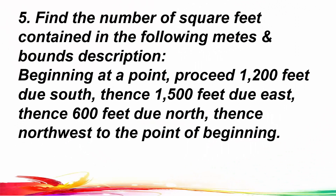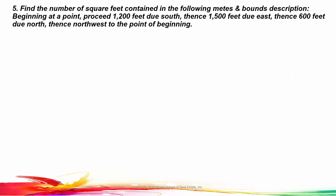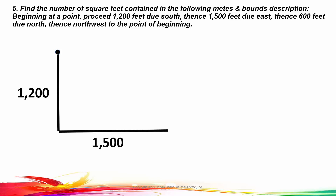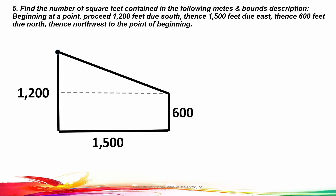Number 5: find the number of square feet contained in the following metes and bounds description. Beginning at a point, proceed 1,200 feet due south, then 1,500 feet due east, then 600 feet due north, then northwest to the point of beginning. So what we have here is a trapezoid. Take your scrap paper and pencil and start at a point, then proceed: 1,200 feet due south, 1,500 feet due east, 600 feet due north, and back to the point of beginning. What we really have here is a rectangle and a triangle, and that triangle is actually half of the bottom rectangle.